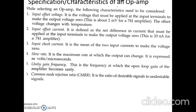The specifications of an op amp include: input offset voltage — the voltage that must be applied at the input terminals to make the output voltage zero; input offset current — the net difference in current between the two input terminals to make the output zero; input bias current — the average of the two input currents to make the output voltage zero; and slew rate — the maximum rate at which the output can change, expressed in volts per microsecond.